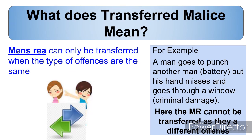But it can only be transferred when the types of offences are the same. So if you go and hit somebody but accidentally put your hand through a window and break it, you've got an offence against the person and an offence against property. Transferred malice will not work here because the mens rea can't be transferred as they're completely different offences.